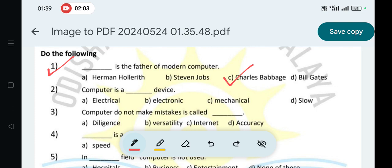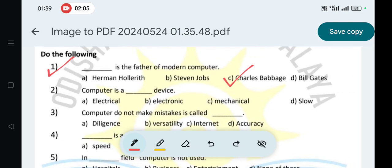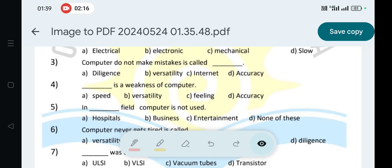Next question two: computer is a dash device. Electronic device, option B is correct. Then question three: computer do not make mistakes is called dash. Accuracy is correct.